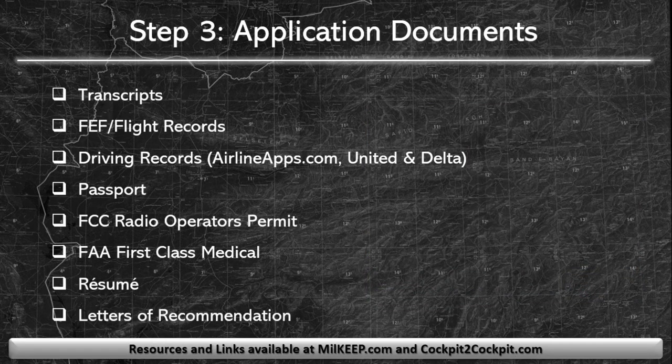Besides flight records needed for the ATP, applications, and interviews, there are a number of other items required to begin building your application portfolio. You're going to need all of your transcripts all the way back to high school and for every degree you've earned. You'll need your flight evaluation folder with all of your checkride records. You'll need your driving records, but only for applications on airlineapps.com, United, and Delta. You'll also need a passport, an FCC radio operator's permit, and an FAA first-class medical.